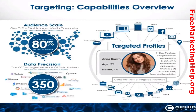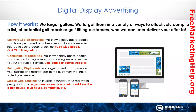We're going to talk today about how you can use digital display to actually target. For this example, let's say we're working with a company that sells golf equipment, they do golf repairs, and they do golf fittings. We can target golfers in a variety of ways to effectively compile a list of potential golf fitting customers to deliver your offer to. We're going to do this with a blended campaign using keyword search targeting, contextual targeting, retargeting, and mobile geofencing.